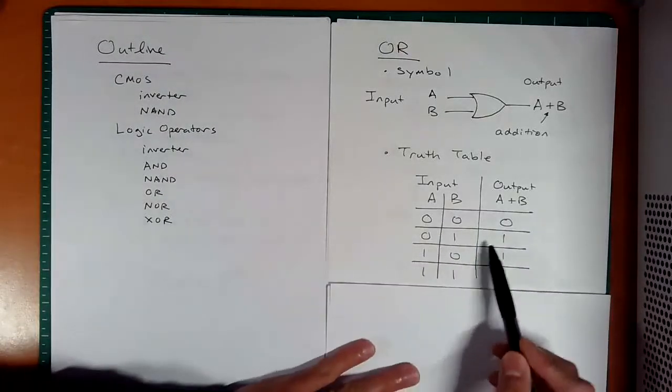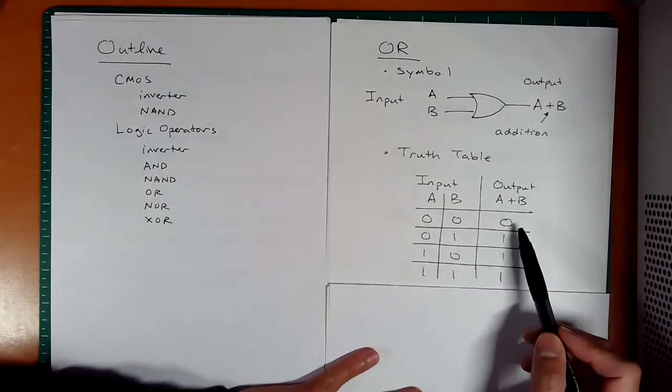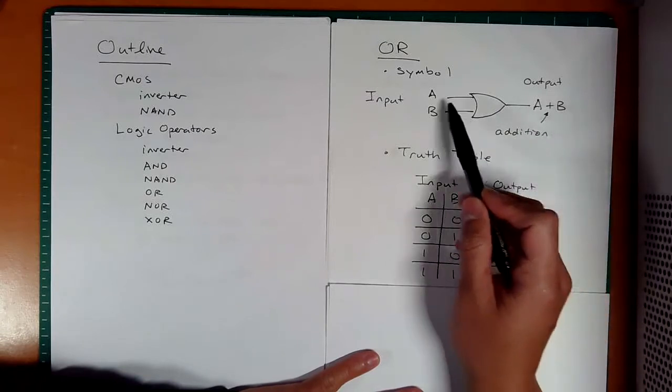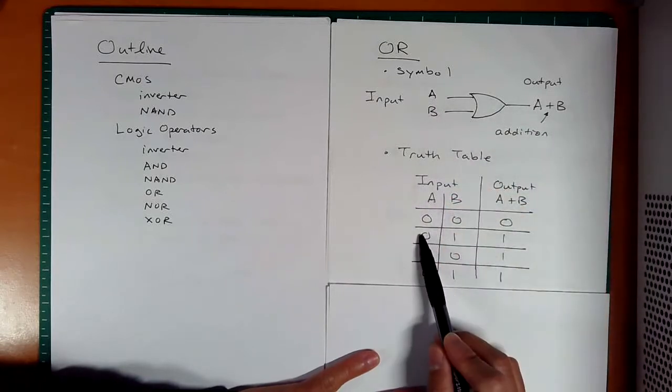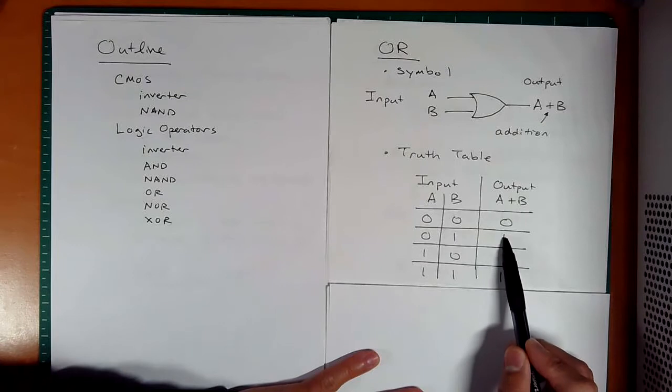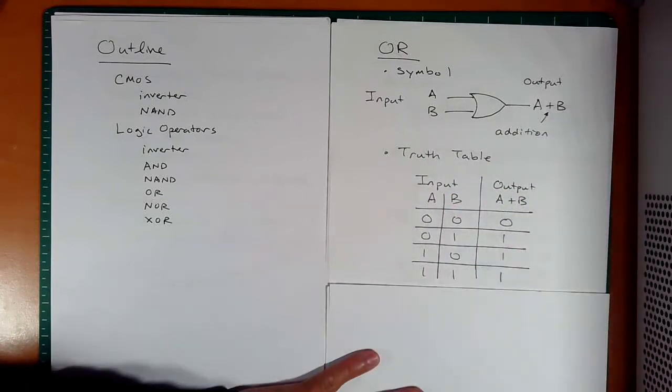So 0, 0, 0, 1, 1, 0, 1, 1. The output is actually true when either one of these are true. Notice the last three rows here are true. If none are true, we get an output of 0.